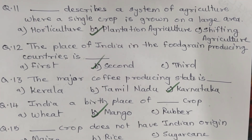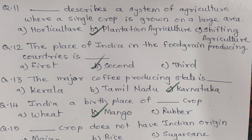Question 14. India is the birthplace of which crop? The options are A. Wheat. B. Mango. C. Rubber. And the correct option is B. Mango.